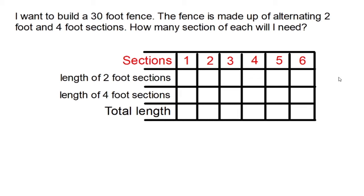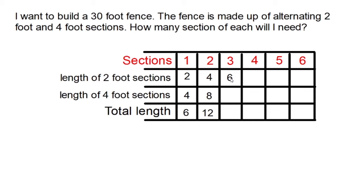If I use one of each section, my 2-foot sections are going to take up a total of 2 feet, and my 4-foot sections will take up a total of 4 feet. My fence at this point will be 6 feet long. If I use two sections of each, my 2-foot sections will take up 4 feet, my 4-foot sections will take up 8 feet, and the total length of the fence will be 12 feet. If I use three sections of each, my 2-foot sections will take up 6 feet, my 4-foot sections will take up 12 feet, and that would be a total length of 18 feet.